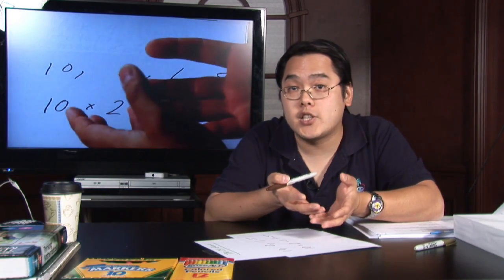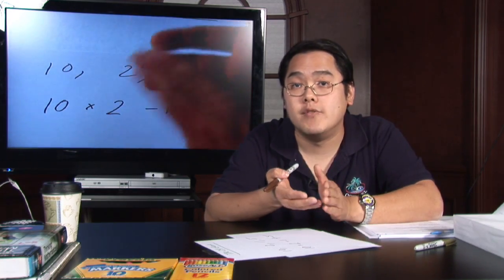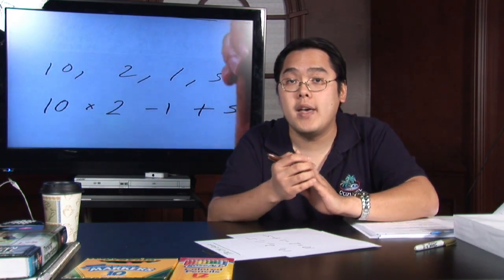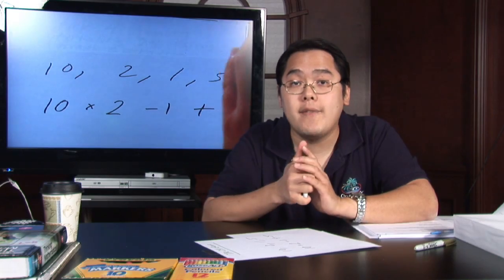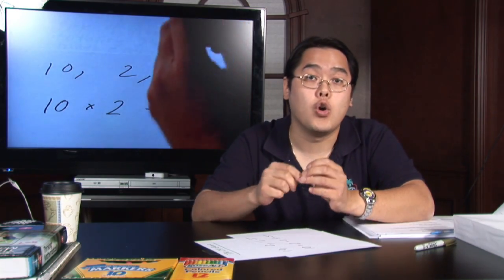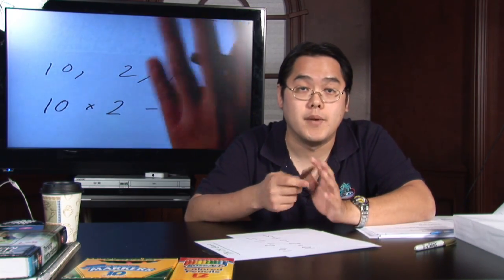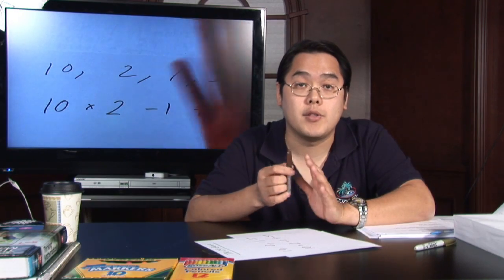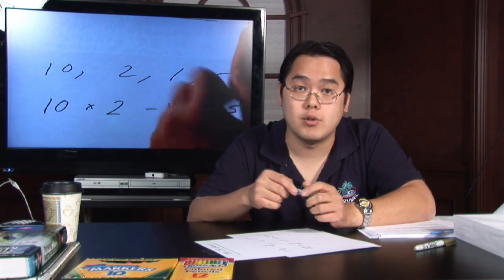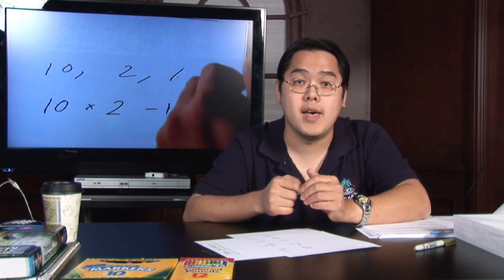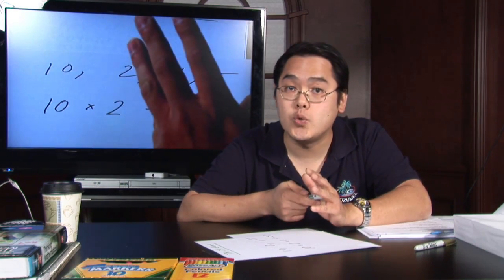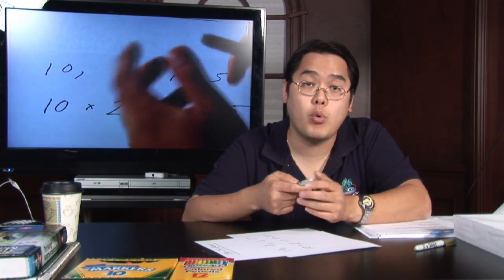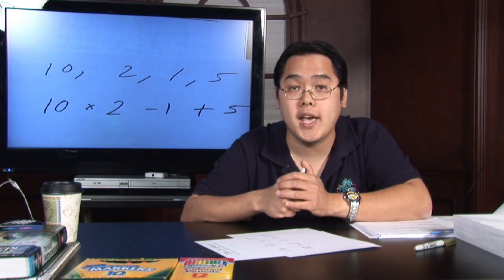Now depending on the class that you have, you can either break the class up into individuals or teams, and then the objective is to have the individuals or teams play the 24 game. Give them four numbers and tell them which operations must be used, so it gives them something to work with, and then the first team or individual to come up with the right answer gets a point or a few points depending on how long you want to play the game.